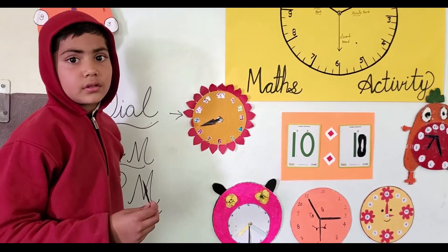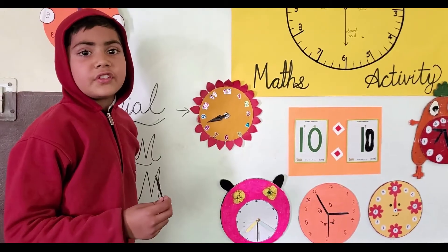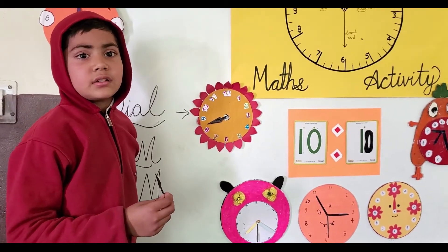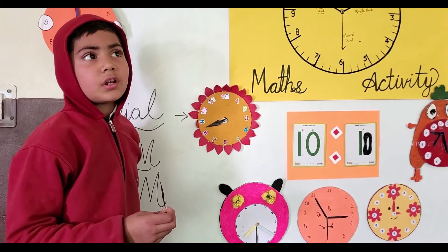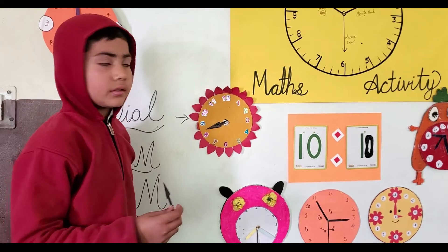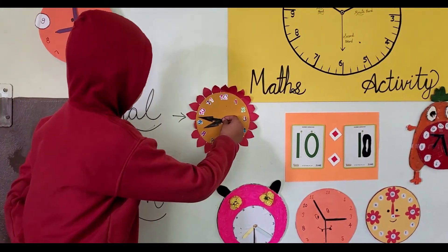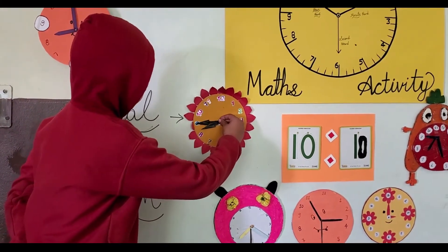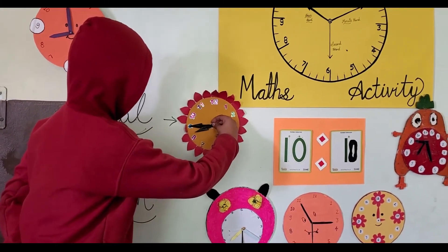Quarter to nine means fifteen minutes left to nine. Set the minute hand according to quarter to nine.